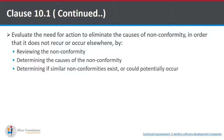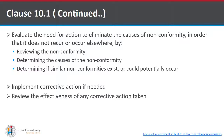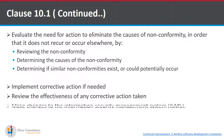The organization shall also evaluate the need for action to eliminate the causes of non-conformity so that it does not recur or occur elsewhere — by reviewing the non-conformity, determining its causes, and determining if similar non-conformities exist or could potentially occur. Then implement the corrective action if needed, review the effectiveness of any corrective action taken, and make changes to the Information Security Management System (ISMS).